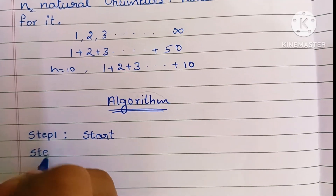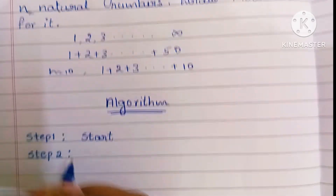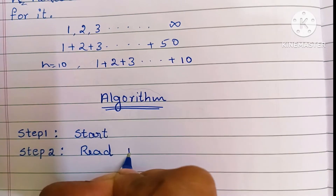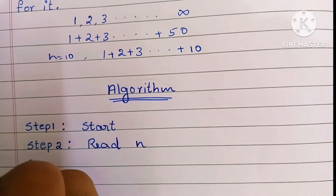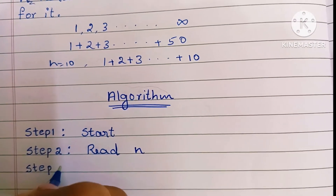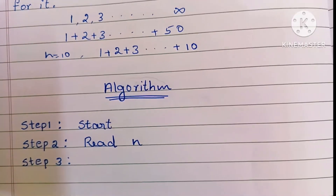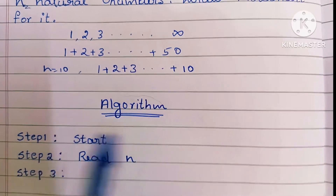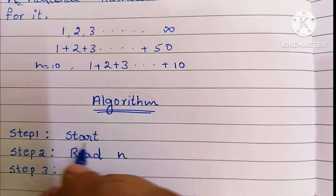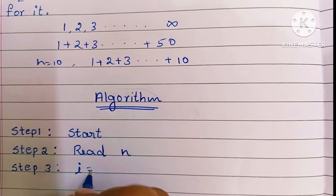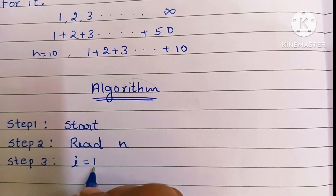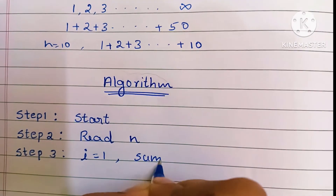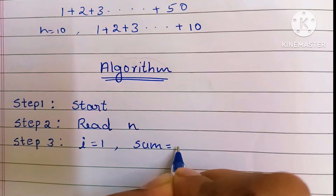Next, Step 2: we have to read the input value. Here we have to read n — that is, read n. Next, in Step 3, we have to declare the values. Natural numbers always start with 1, so here we declare variable i is equal to 1. Also, initially sum is equal to 0, so we write sum is equal to 0.